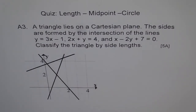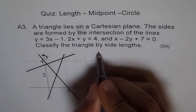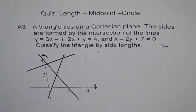One more thing you can look into is the slope of each line. In case two of the lines have negative reciprocal slopes, then it could be a right angle triangle also. So let's rewrite these equations to check the slope.